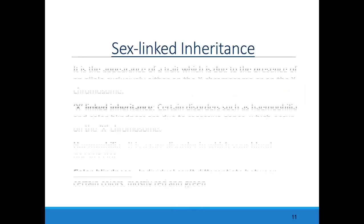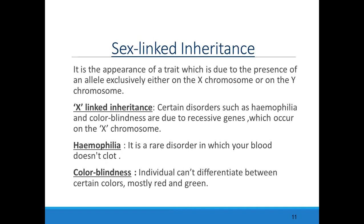Sex-linked inheritance is the appearance of a trait due to the presence of an allele exclusively either on the X chromosome or on the Y chromosome. X-linked inheritance means the genes for this inheritance are completely present on X chromosomes. Examples are hemophilia — a rare disorder in which blood does not clot — and color blindness, where an individual cannot differentiate between red and green.